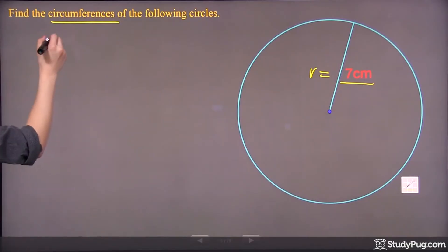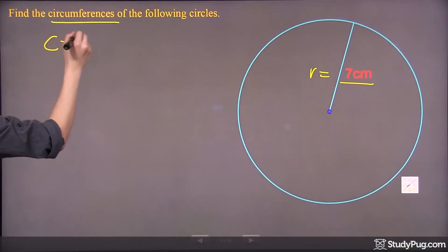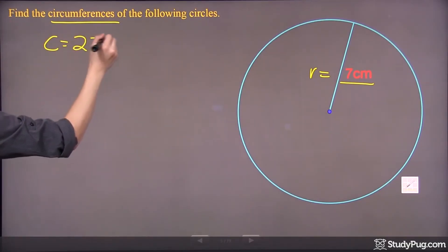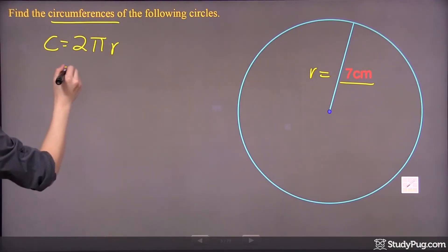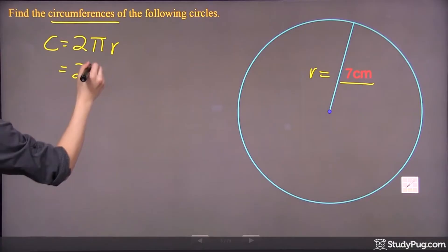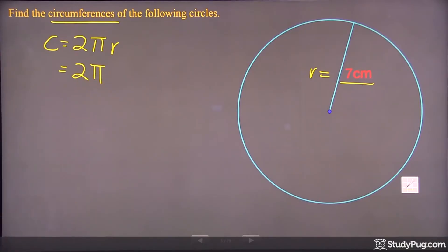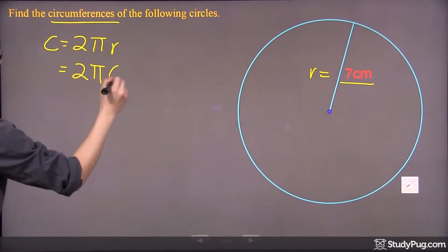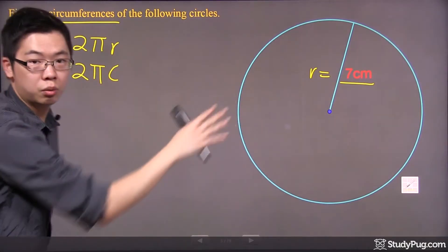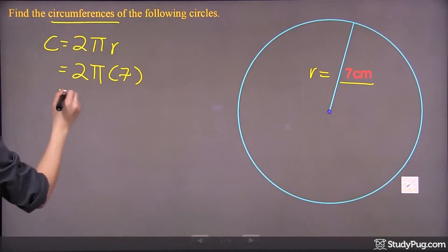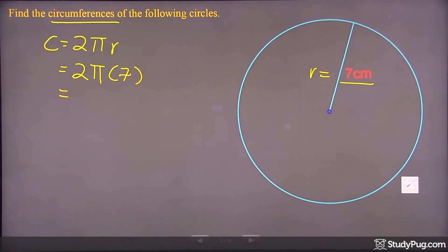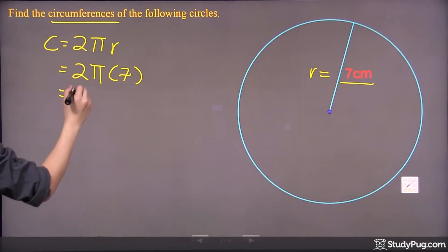The first thing we need is to figure out the equation, and the circumference of any circle is 2πr. The 2 is ready for you, and for pi, you just have to punch it into your calculator. The radius is already provided to you in the information there. So all you have to do is grab your calculator and punch in 2 times pi times 7.